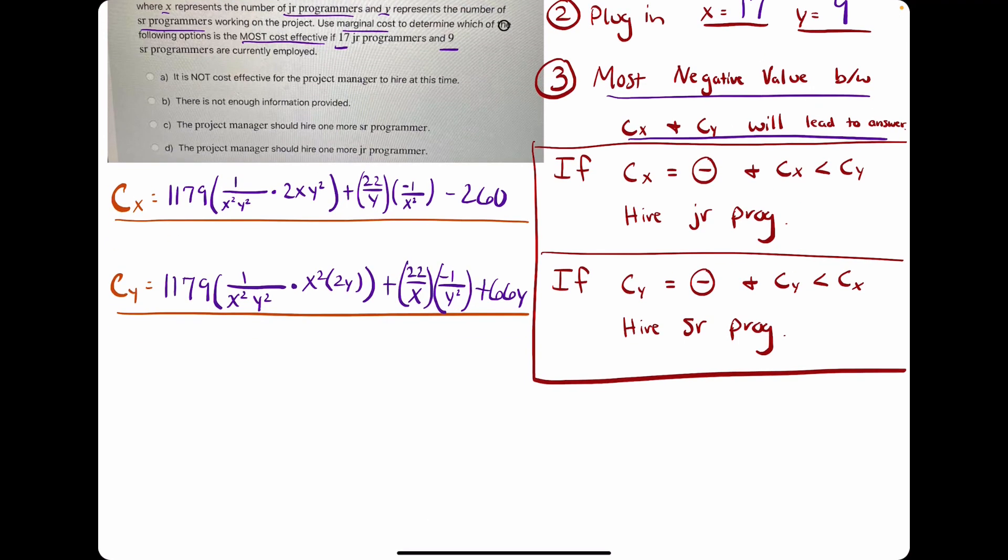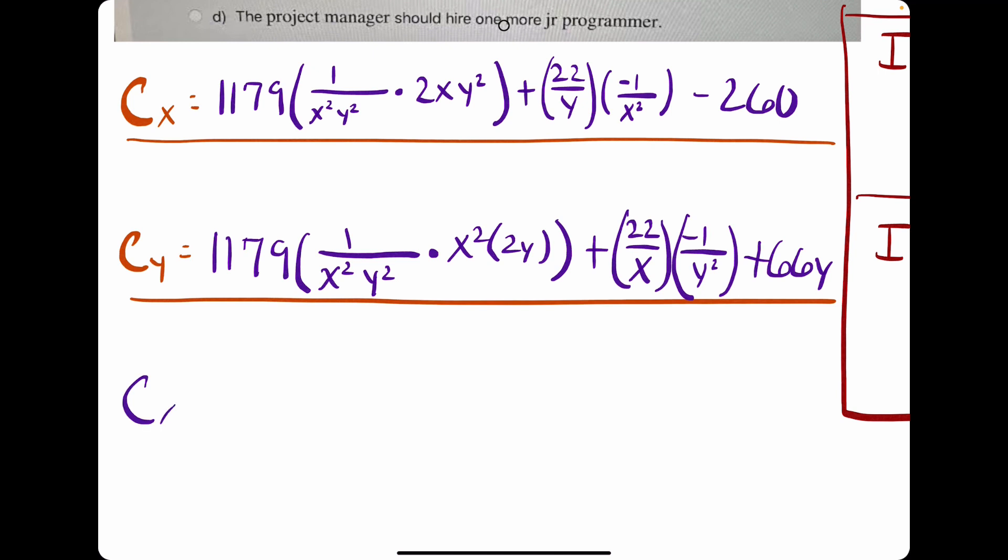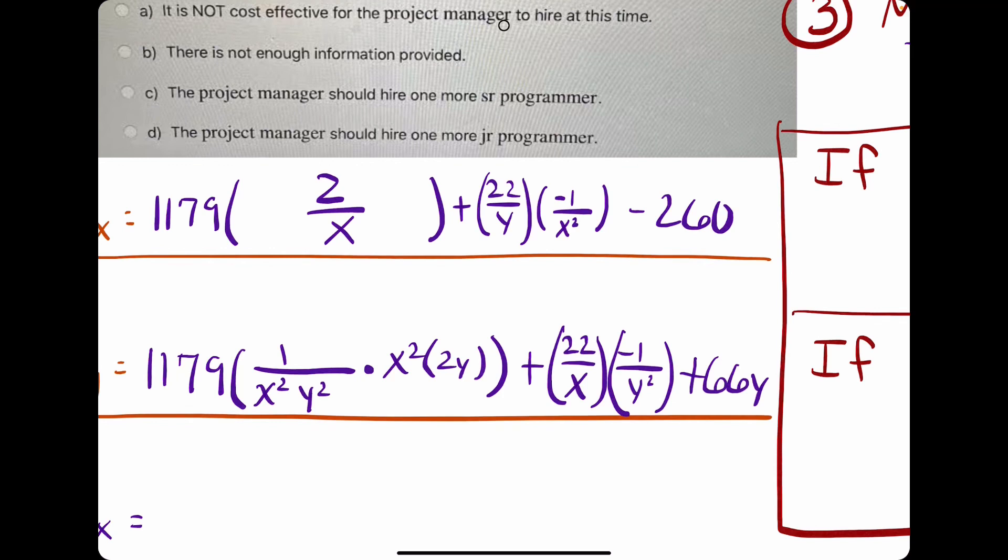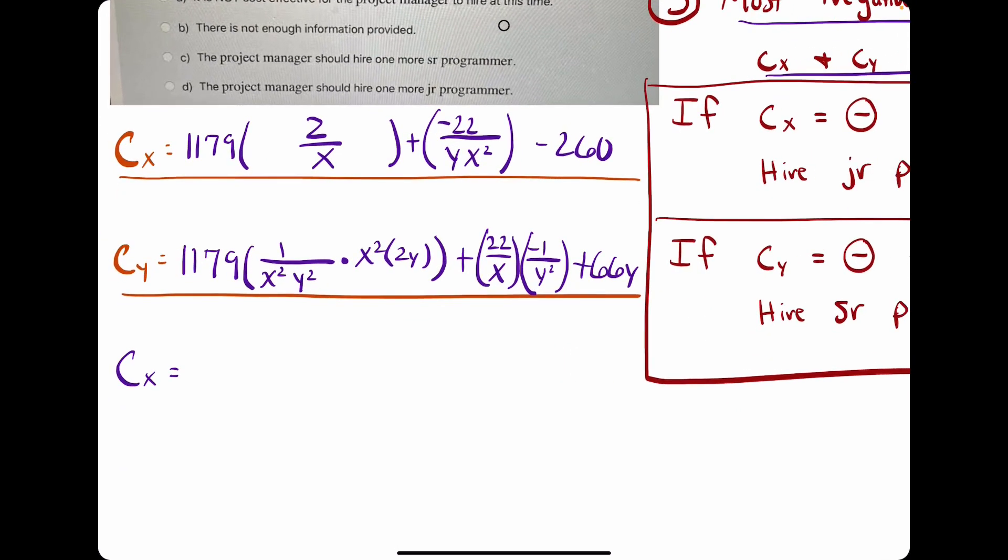Let's simplify a couple things before we plug in our values. Cx equals, let's see, so we have an x squared. So like all this stuff here, we can rewrite as 2xy squared. Y squareds will cancel. One of these x's will cancel, leaving us with just 2 over x. So I may just simplify it within the mix here. And then we can combine these if we want and call it negative 22 over yx squared.